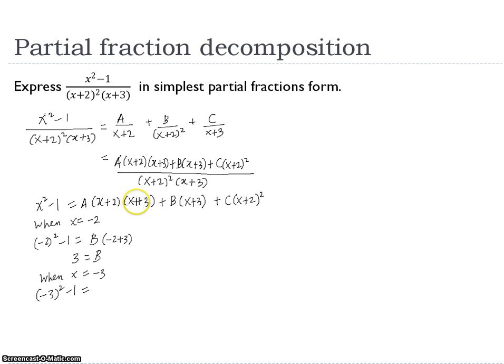So this part, negative 3 plus 3, A is gone, it becomes 0. Substitute negative 3 plus 3, 0 for B. So we just substitute into C, negative 3 plus 2 squared. So if you simplify everything, you get C equals 8.